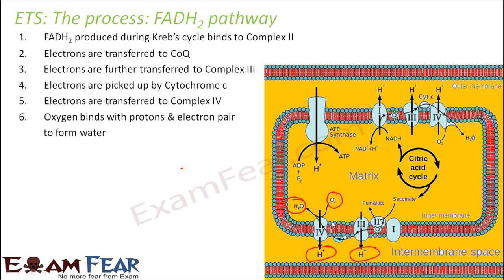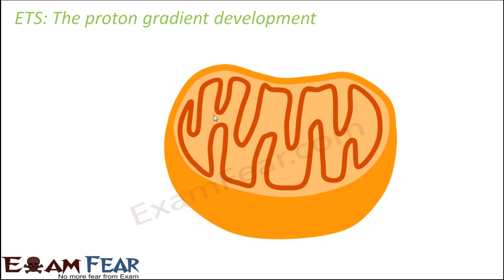Please understand how the proton gradient is developed, because that is the most important part. Once the proton gradient is developed, ATP synthesis is straightforward — based on the chemiosmotic hypothesis, which we covered in the lesson on photosynthesis. The proton concentration outside the inner membrane, in the intermembrane space, is very high compared to the matrix. Because of this proton gradient, ATP synthesis takes place by the chemiosmotic hypothesis.